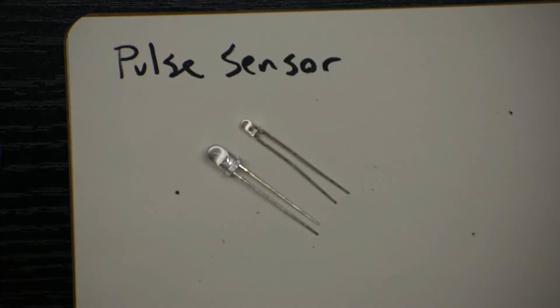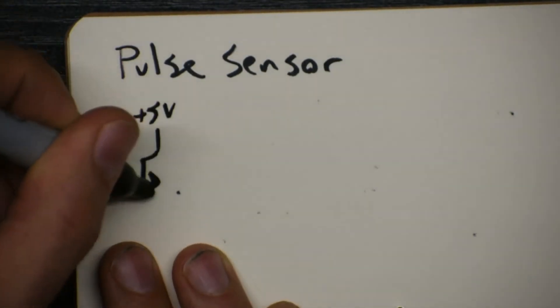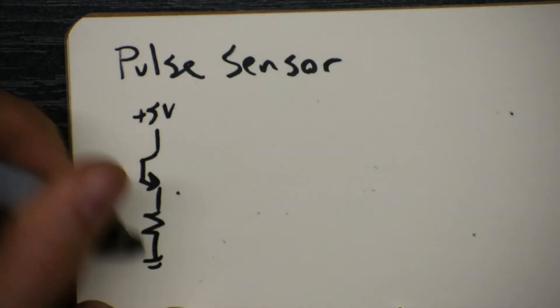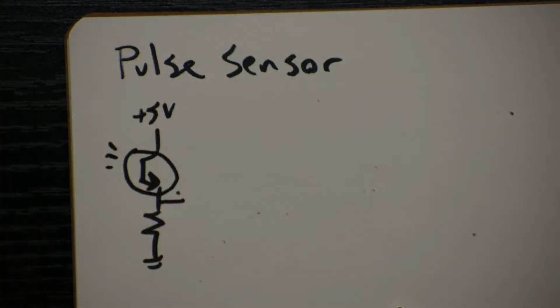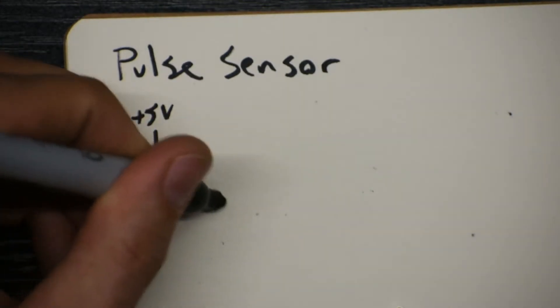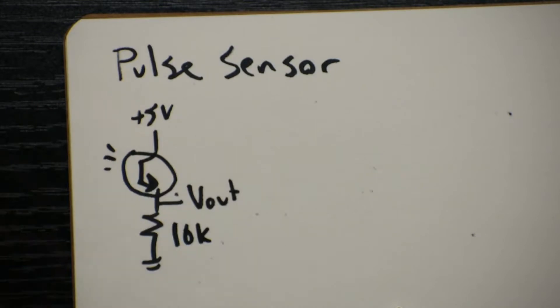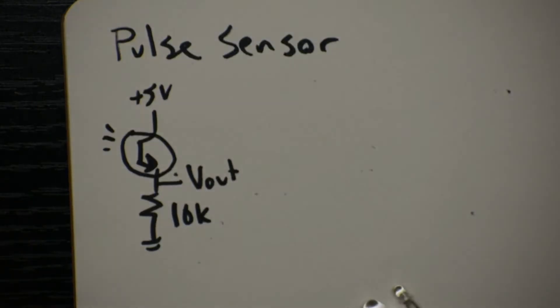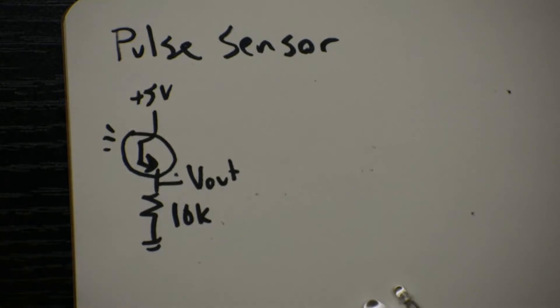So what we're going to do is we're going to take our basic phototransistor circuit. Our phototransistor, there's light hitting it, and we're going to get some output voltage. And we'll choose something like 10k to be in series with it. So the voltage out won't be huge. And that's something we can play around with if we need a bigger signal.